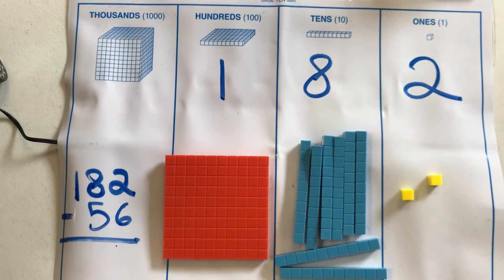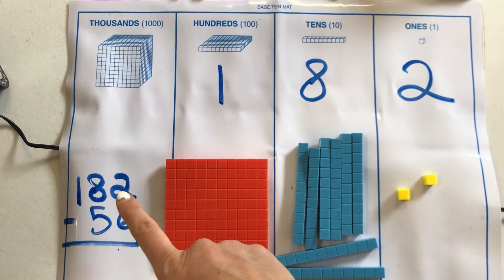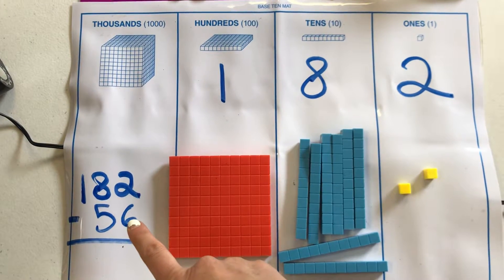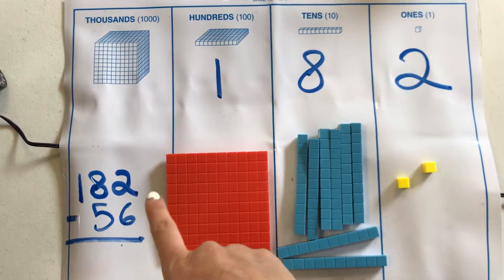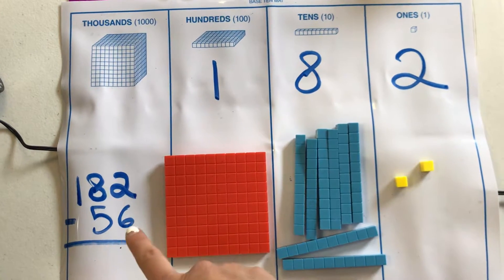So we are going to start in our ones place, as always, and we're going to try and take away six. Well, wait a minute. If I only have two, I can't take six away.